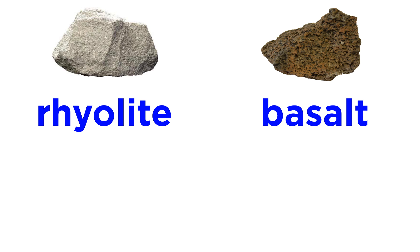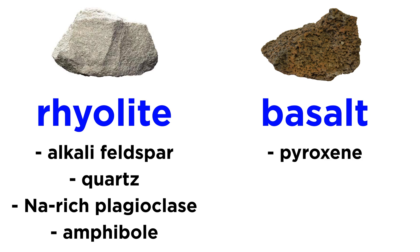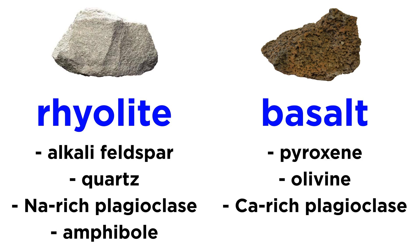Rhyolite and basalt are very different rocks, and it is typical for them not to have any common minerals. For example, rhyolite is rich in alkali feldspar, quartz, and sodium-rich plagioclase, with minor amounts of amphibole, while basalt is mainly composed of pyroxene, olivine, and calcium-rich plagioclase, with minor amounts of iron and titanium oxides.